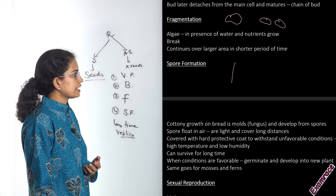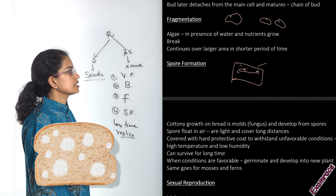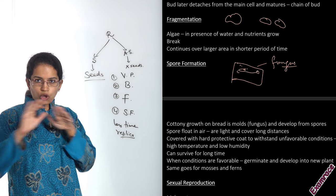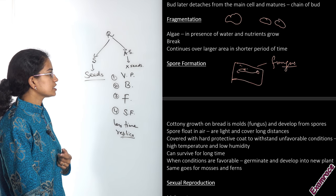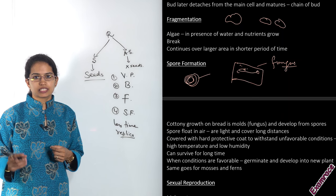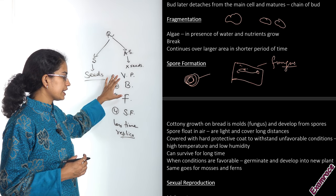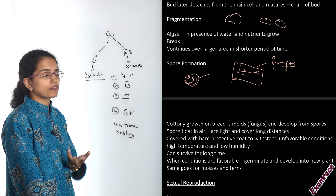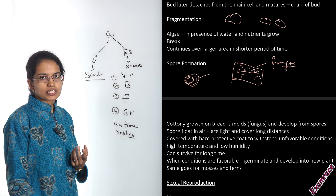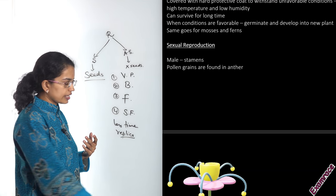The next important process is spore formation. If you have seen bread mold, you would notice a white cottony growth on the surface — this is a fungus (plural: fungi) that grows on top of the bread. Spores propagate through air, have a very hard shell, and can withstand high temperatures and extreme weather conditions. They can live in low humidity and survive for a very long time. When conditions become favorable — such as on moist bread — they germinate into new plants. Mosses, ferns, and fungi all propagate by spore formation.